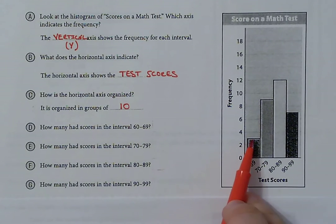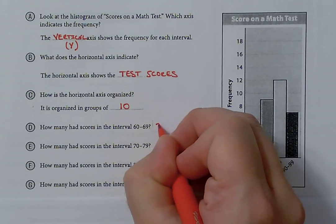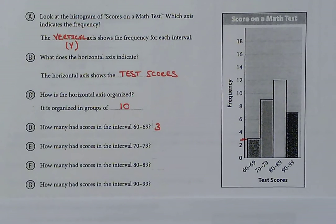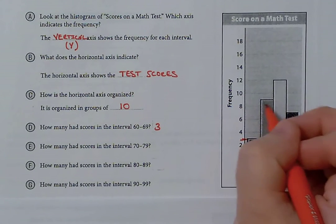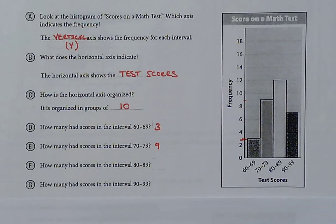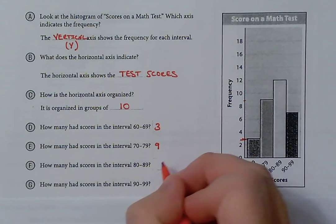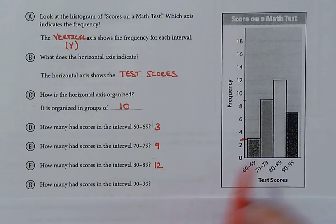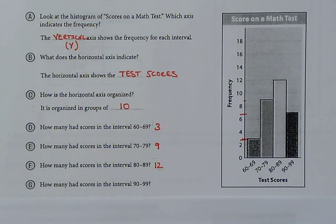From 60 to 69, that's going to be in between 4 and 2 — so 3 scores. From 70 to 79, that's going to be in between 10 and 8 — so 9. For 80 to 89, that's right at 12. And then from 90 to 99, that's going to be in between 8 and 6, which gives us 7. That is how we can go through and interpret data and find different parts from a histogram.